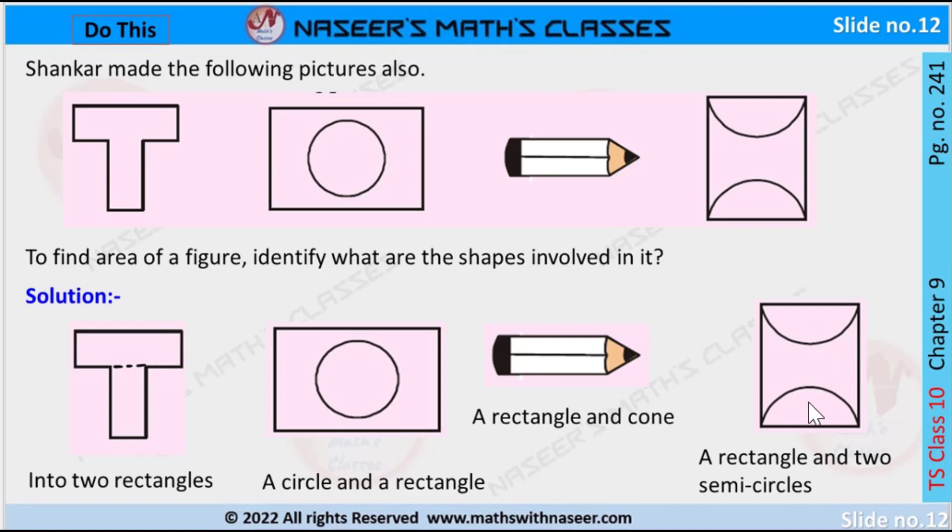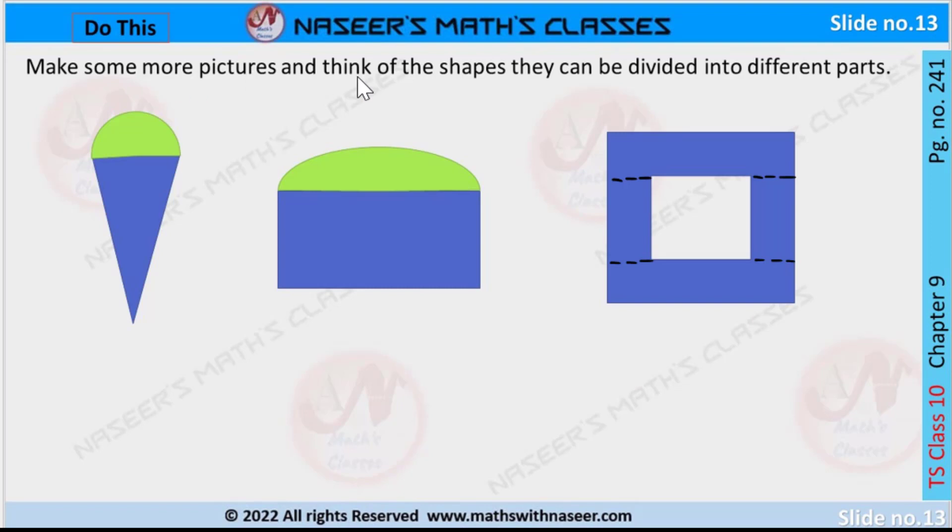Make some more pictures and think of the shapes they can be divided into different parts. There are three pictures made. First one is cone and a semicircle. Second one is divided into two parts - one is rectangle and one is semicircle. Next, third picture is divided into four rectangles - upside and downside, in the left side and the right side.